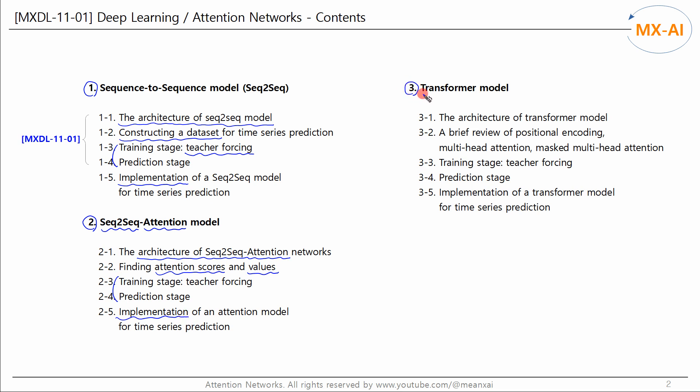In Chapter 3, we will look at the transformer model. The transformer consists of a self-attention-based encoder and decoder rather than an RNN-based encoder-decoder structure. It is also designed for natural language processing. However, here we will remove the word embedding layer from the original transformer structure and modify some of the padding mask functions to apply them to time series prediction.